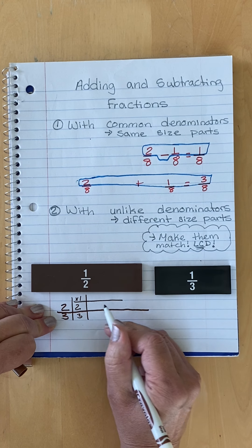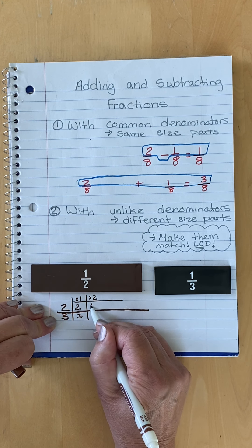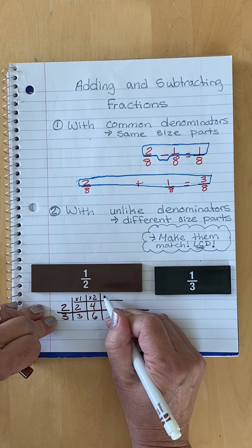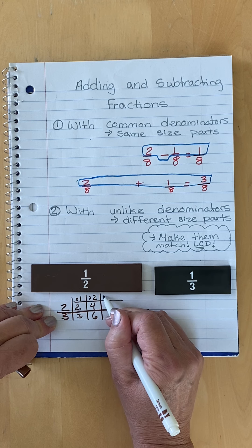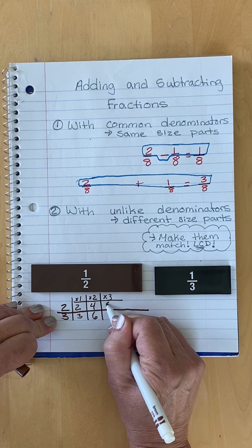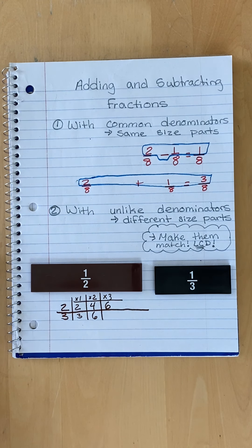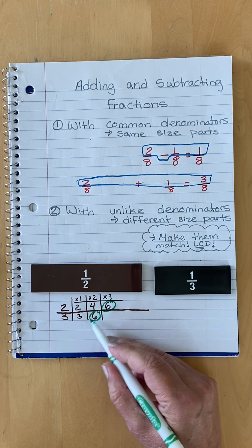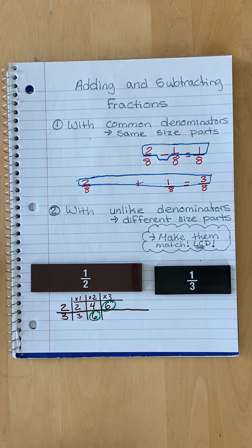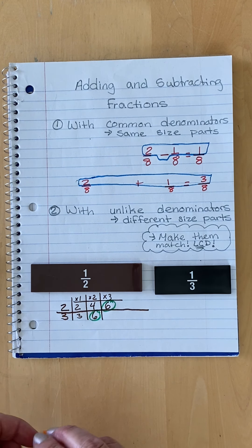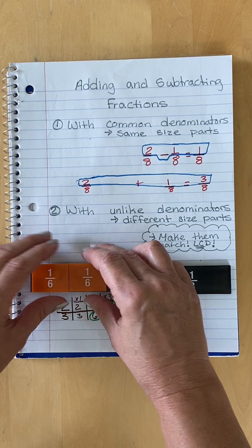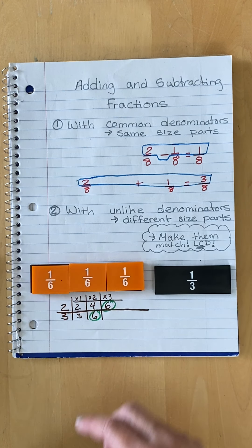We're going for a match because we want them to match. Times two: two times two is four, and two times three is six. Two, three, four, and six — no matches yet. Times three: two times three is six. We can stop right there because we have a six and we have a six — they match, and that's what we're looking for. We're trying to get them common. That means I'm going to turn my halves into sixths — my denominator needs to be six. So I'm going to change my halves to sixths and my thirds to sixths, because six is the least common denominator.